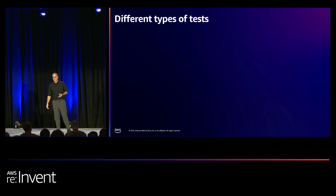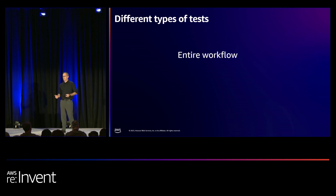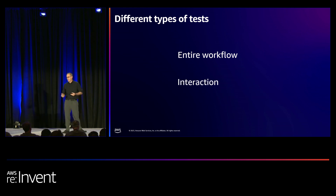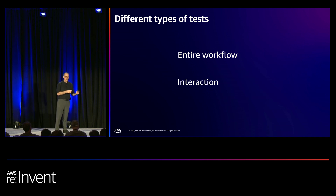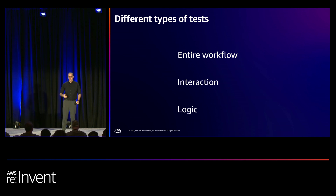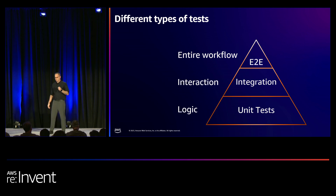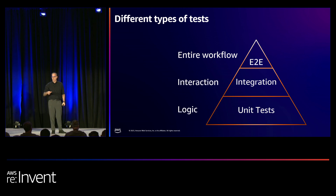There are different kinds of automated tests depending on what you're trying to achieve. There are tests that test your entire system end-to-end — you see these often from automation teams who set the whole application up, all the microservices, put something on one end and check on the other end that something happened. There are also interaction-based tests to make sure different parts of the system know how to talk to one another. And finally, you have logic tests. Unit tests test your logic, integration tests test interaction, and end-to-end tests test your entire system.